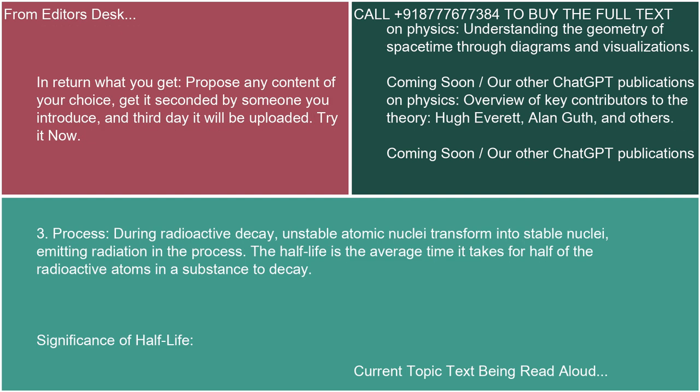During radioactive decay, unstable atomic nuclei transform into stable nuclei, emitting radiation in the process. The half-life is the average time it takes for half of the radioactive atoms in a substance to decay.